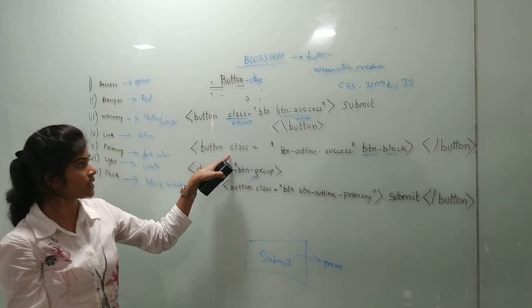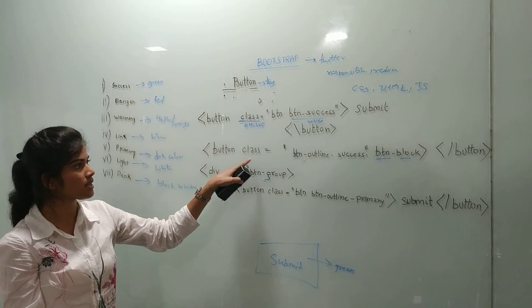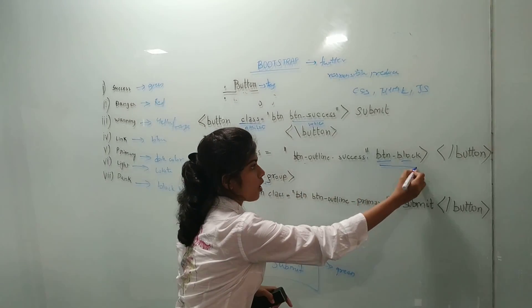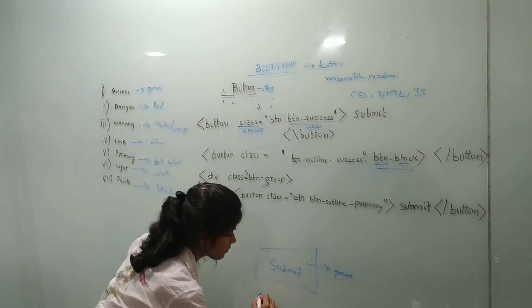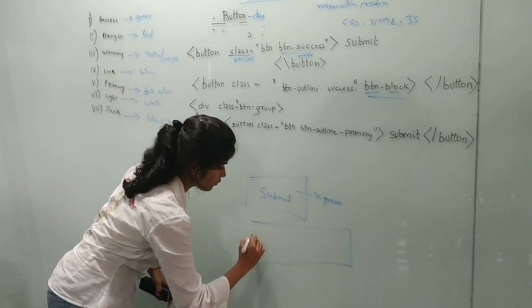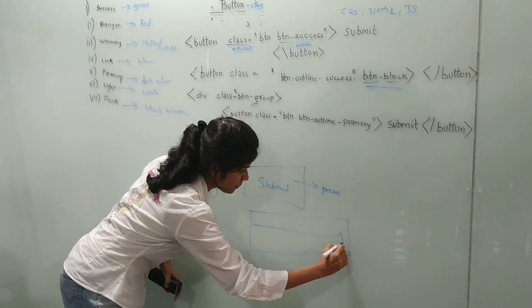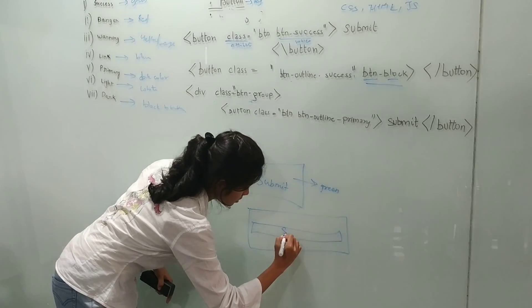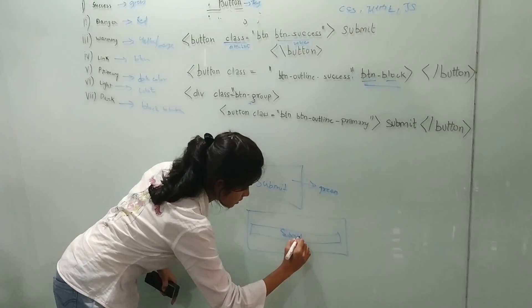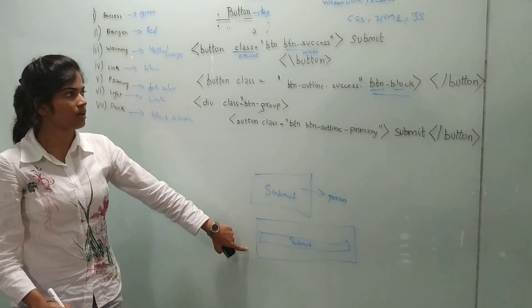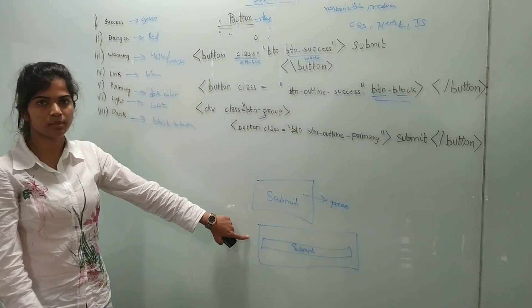For button class we have taken button block. Means what? Whenever we are creating any kind of button it will create the complete block. In this way the output will be. Our button will be created.